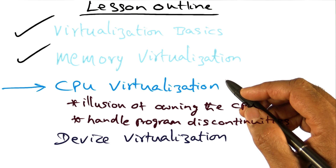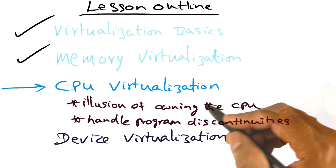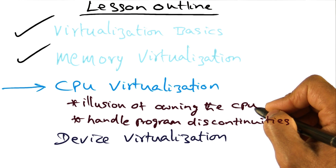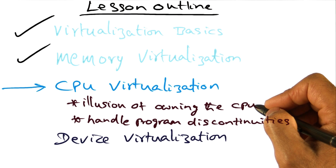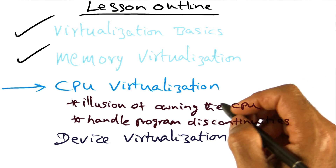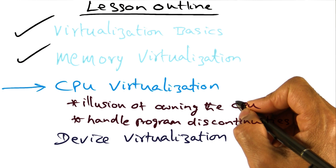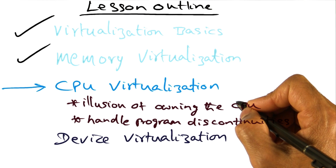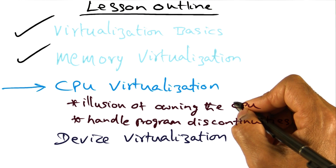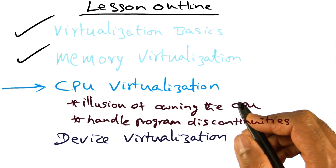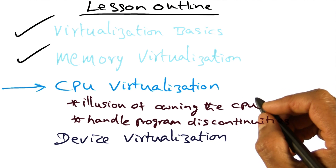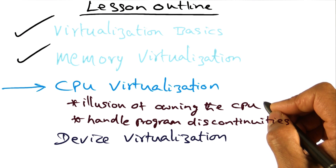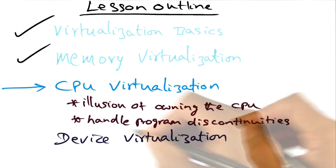There are two parts to CPU virtualization. We want to give the illusion to each guest operating system that it owns the CPU — that is, it does not even know the existence of other guests on top of the same CPU. If you think about it, this is not very far removed from the concerns of a time-shared operating system, which has to give the illusion to each running process that that process is the only one running on the processor. The main difference in the virtualized setting is that this illusion is being provided by the hypervisor at the granularity of an entire operating system. That's the first part.